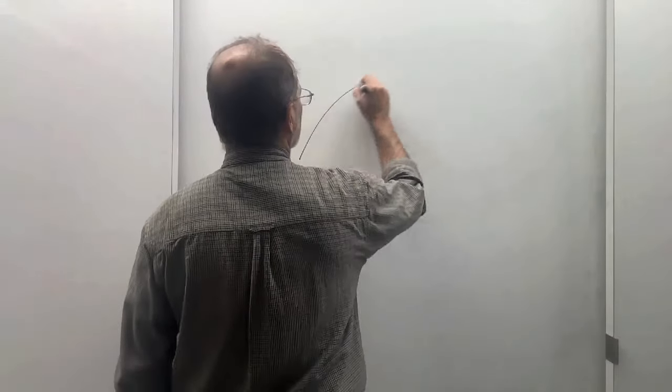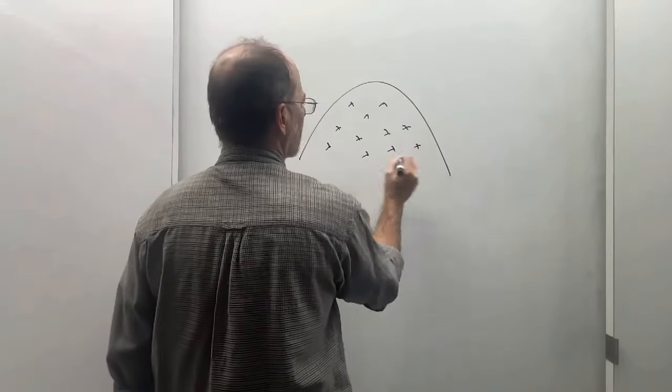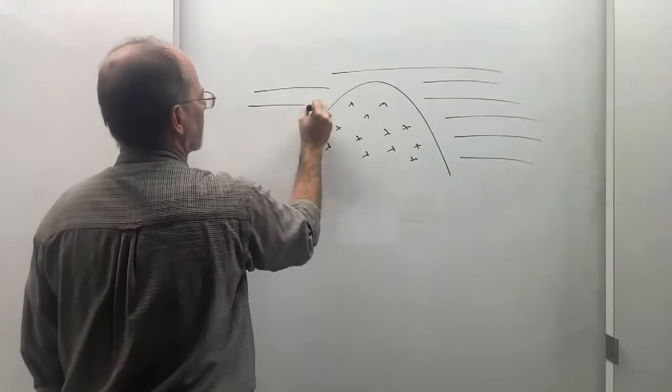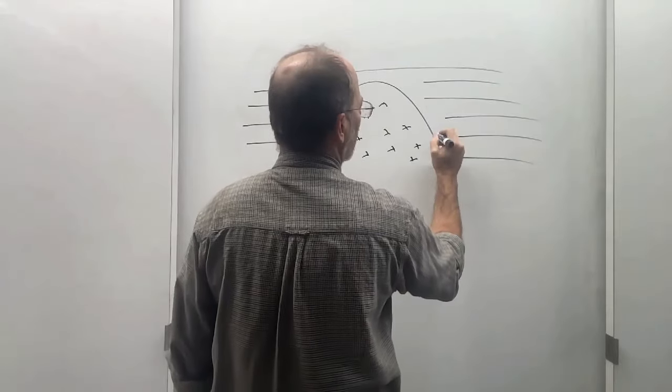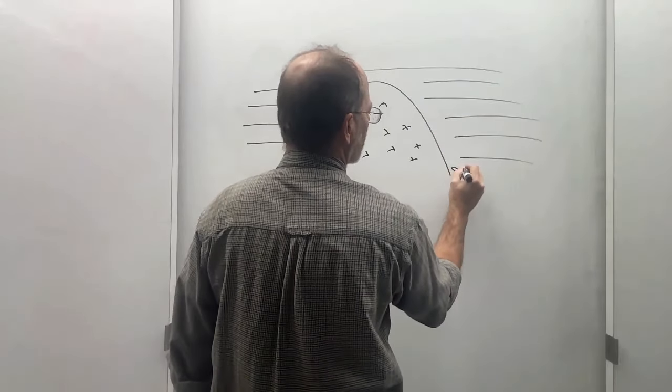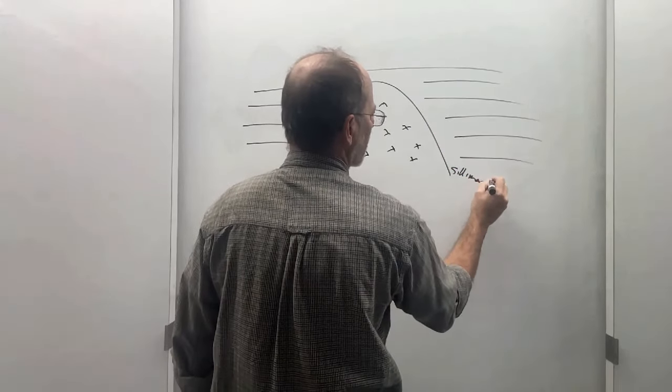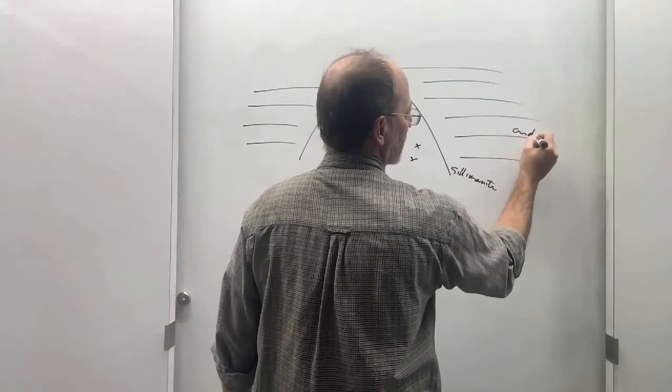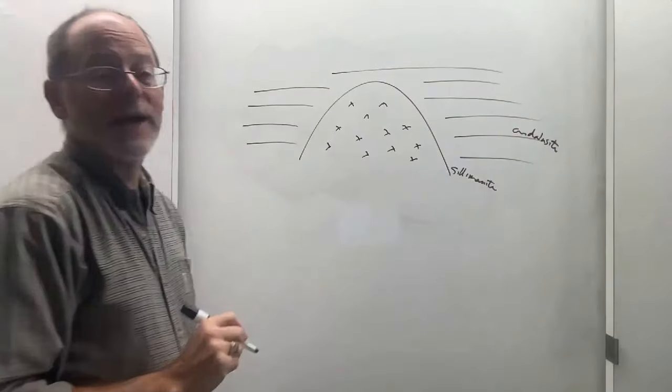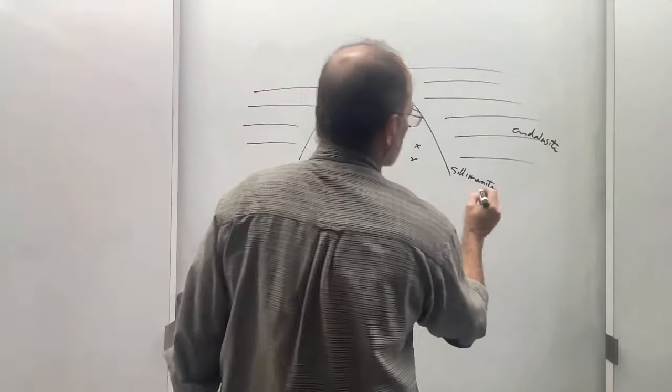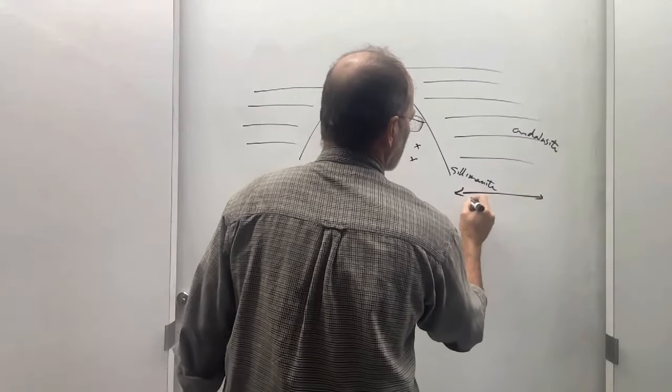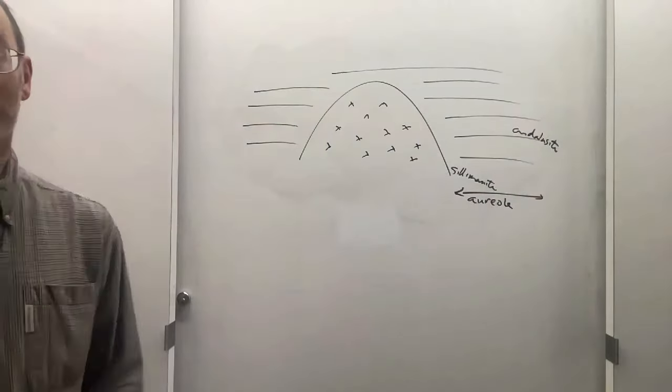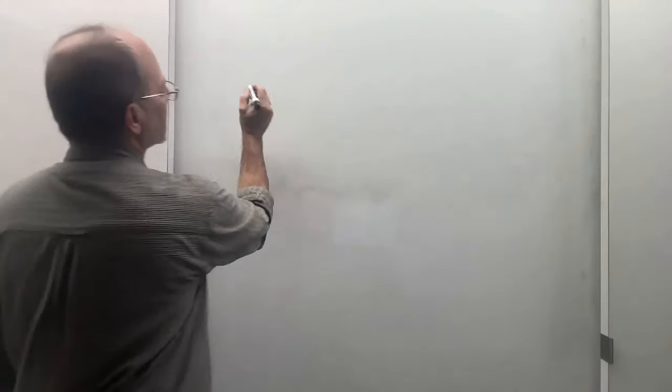When a pluton intrudes mudstones, we find sillimanite near the pluton and andalusite further away, and this whole region in here is called the contact aureole.